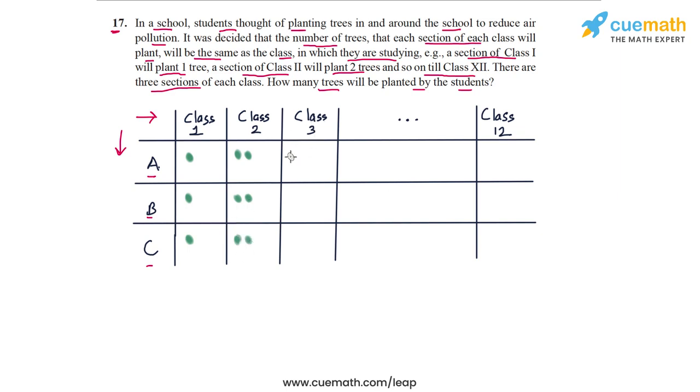Now if you go to class 3, you will have three trees planted by class 3 section A, another three trees planted by section B, and another three trees planted by section C, and so on. So when you reach grade 12, then each section will plant 12 trees.